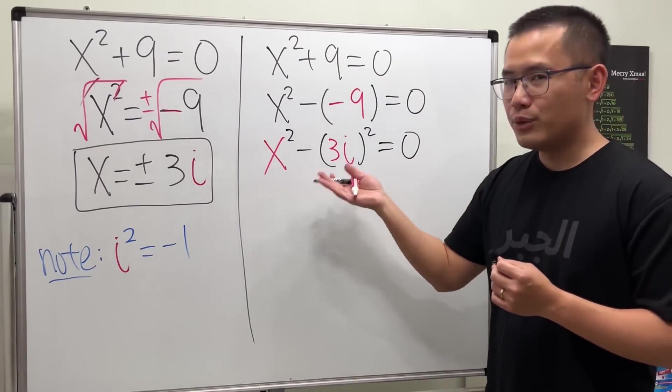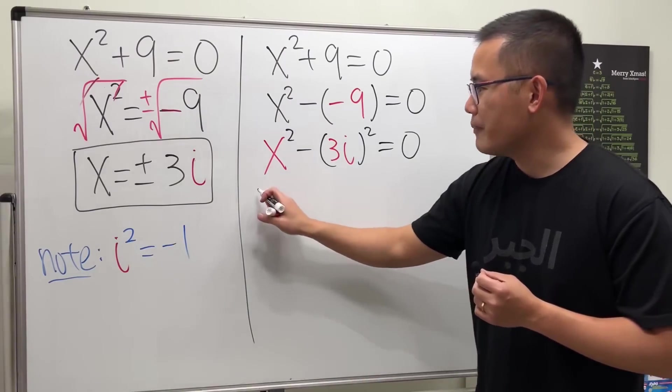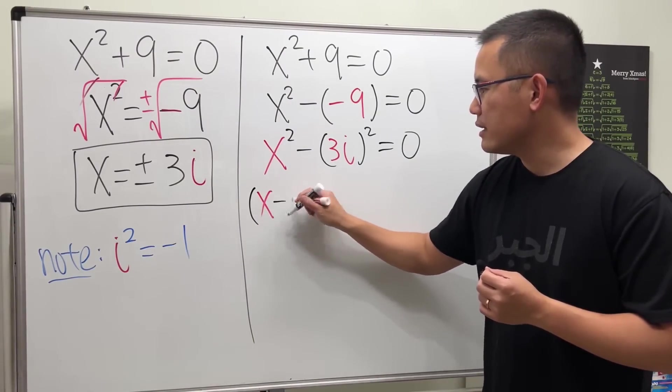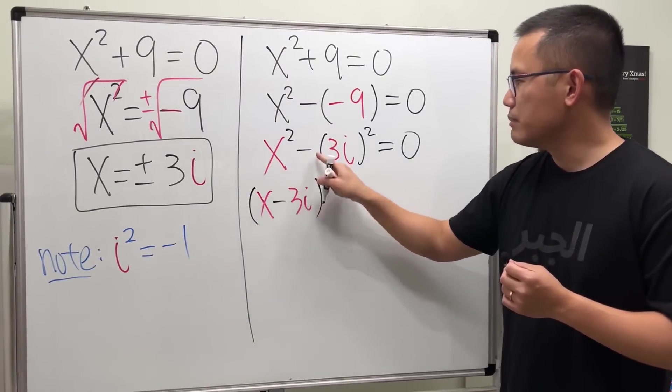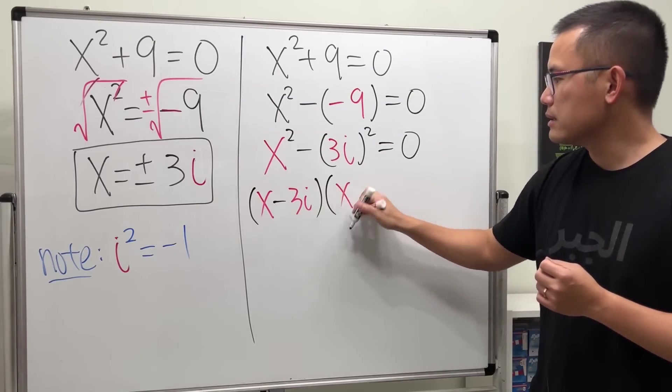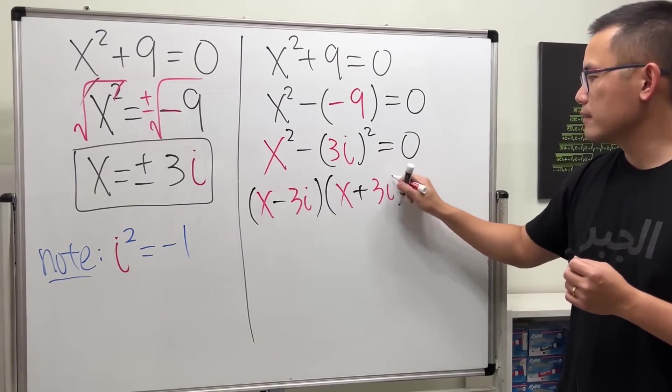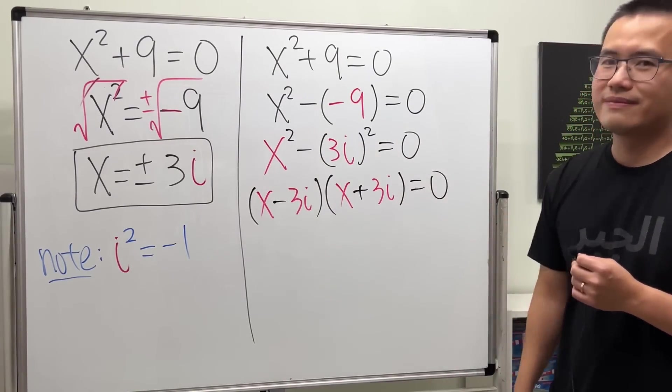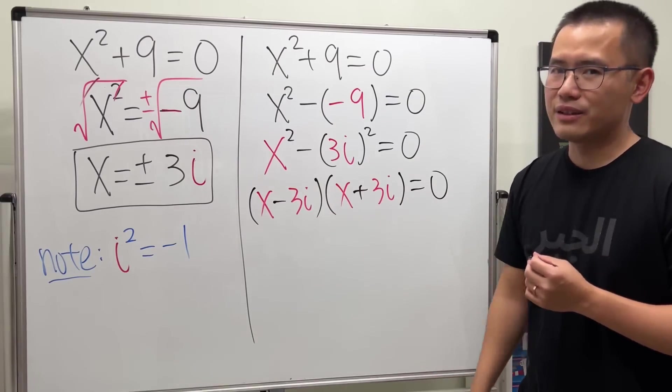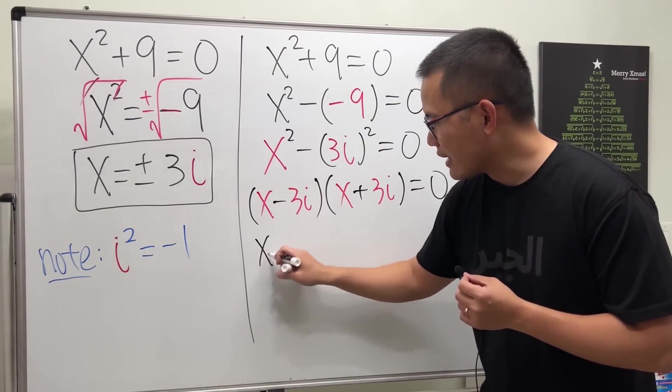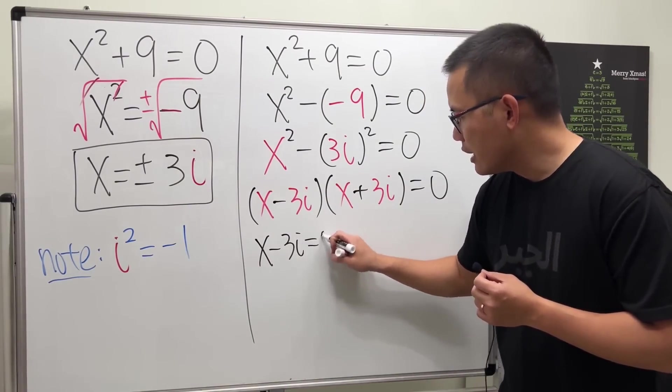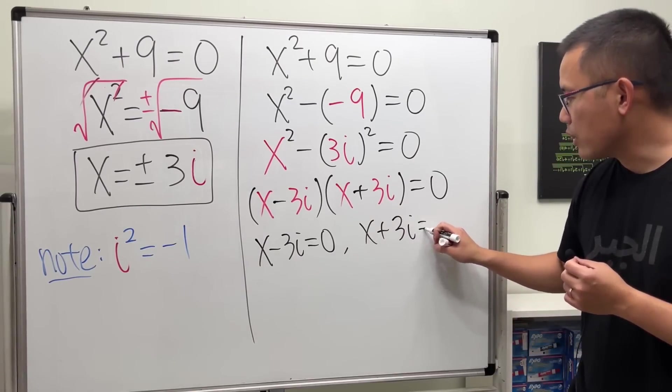Then we can factor it by using the difference of two squares formula, which is x minus 3i. This minus that. Times x plus 3i. So, you can see that we have two factors. We are going to set the first factor equal to 0. Likewise, the second factor equal to 0.